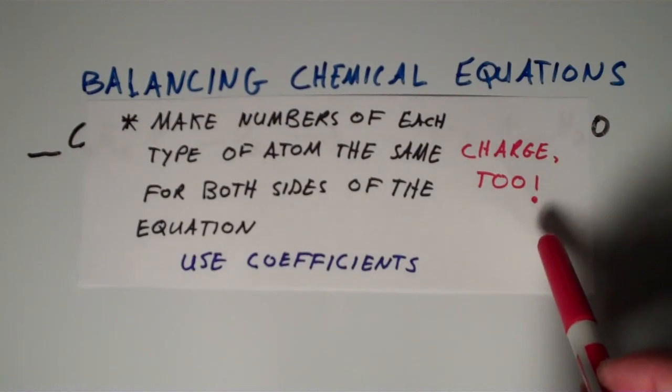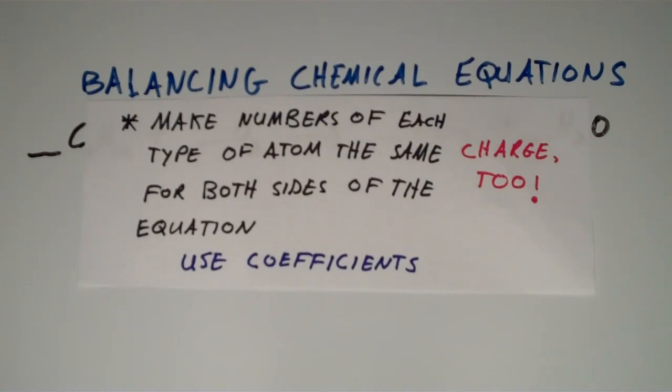Note also that the total charge has to be the same for both sides of the equation. So the total charge on the left-hand side of the equation must equal the total charge on the right-hand side of the equation. It must be balanced both atomically and electrically. So let's get right into an example.